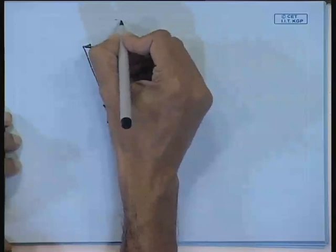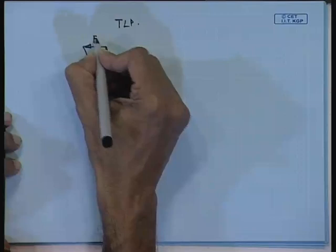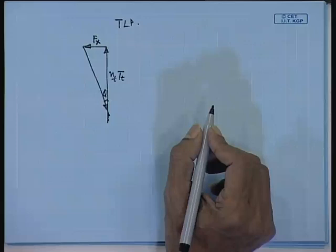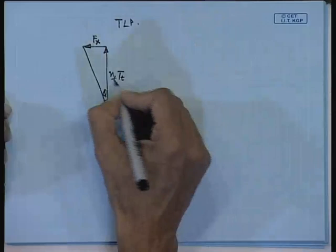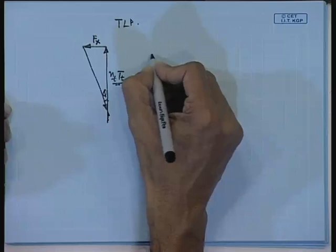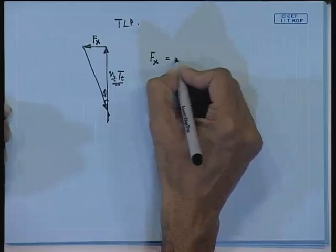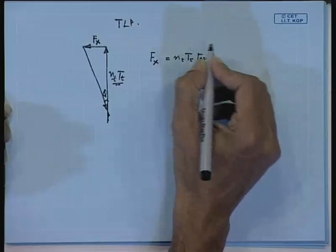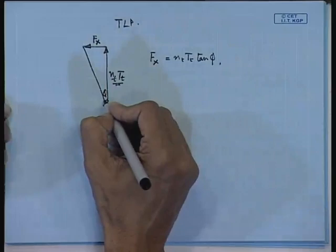The platform will continue to try to maintain tension. Your F_x is the horizontal force, the summation of your horizontal wave, current, and wind forces. Now, N_T is the cable tension. So, F_x you can write as N_T * tan(phi), where phi is this angle. So, F_x = N_T * tan(phi).